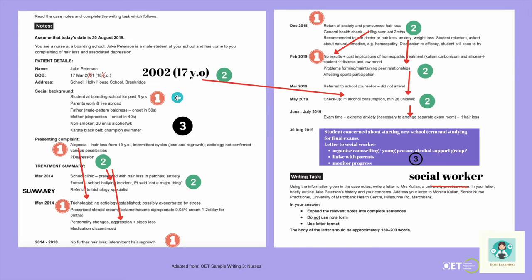Here is his history. He's 17. He's been at this boarding school for the past eight years. His parents live and work abroad — remember, that's connected with the request to ask the social worker to liaise with his parents who live abroad. His father has had baldness in the past, his mother has had depression. He's a non-smoker but drinks alcohol — 20 units a week. He's a karate black belt and a champion swimmer, so he's obviously very sporty.